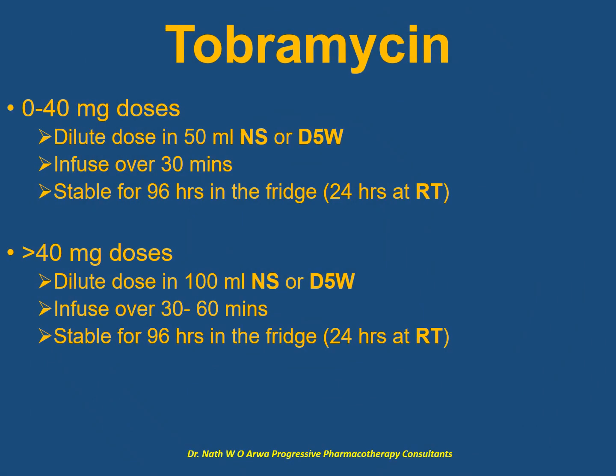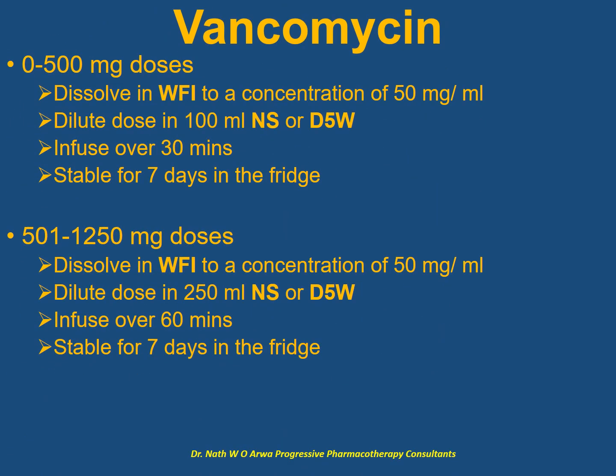For tobramycin, which presents as an aqueous solution that must be diluted, for doses of up to 40 mg, dilute the prescribed dose in 50 ml of normal saline or dextrose 5% and infuse over 30 minutes. Stability is 96 hours in the fridge or 24 hours at room temperature. For doses exceeding 40 mg, dilute in 100 ml of compatible IV fluid and infuse over up to one hour. Stability remains 96 hours in the fridge or 24 hours at room temperature.